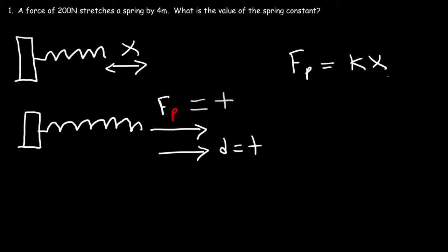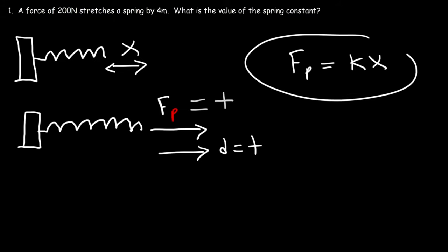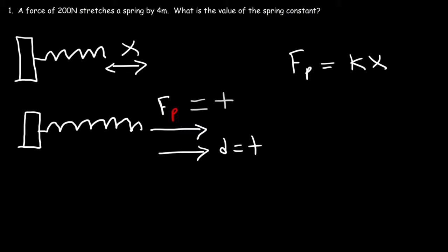Now this equation works up to a limit. F and x are proportional up to a limit. Once you pass the elasticity region, the spring can elongate without much extra force. So we're going to focus on the elastic region, where F and x are proportional.